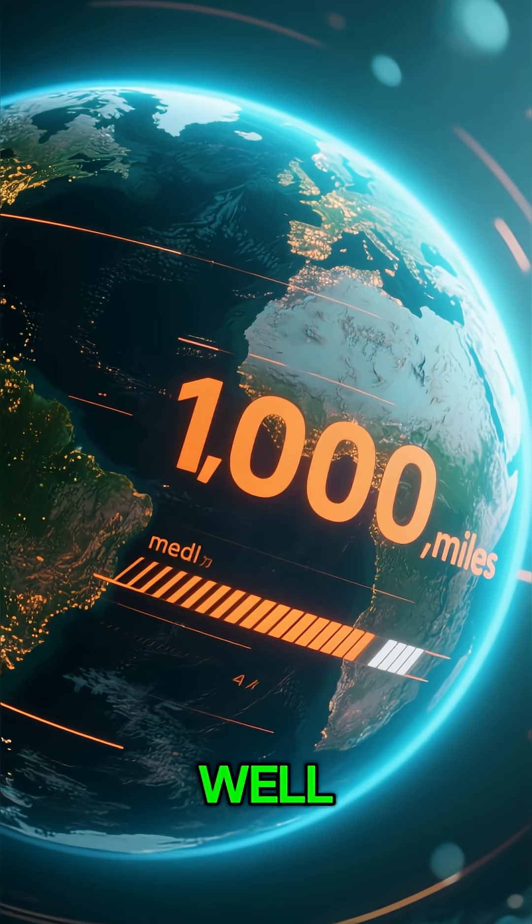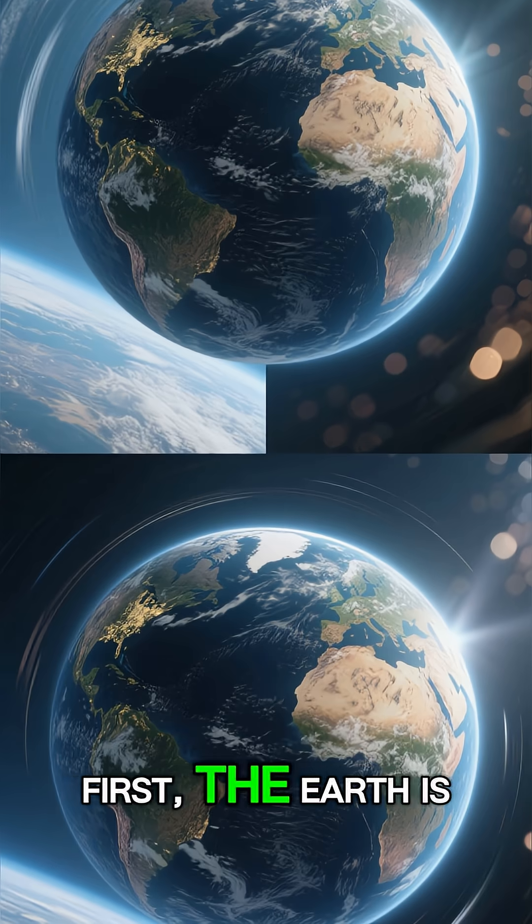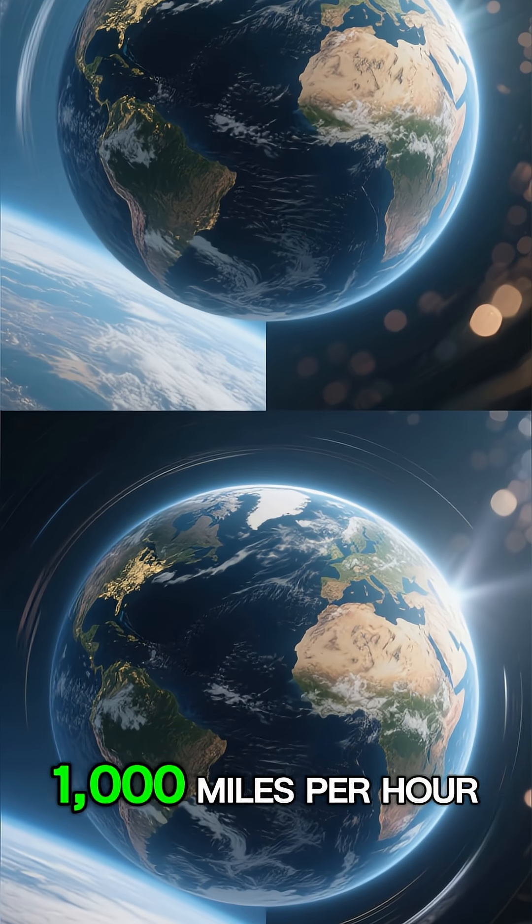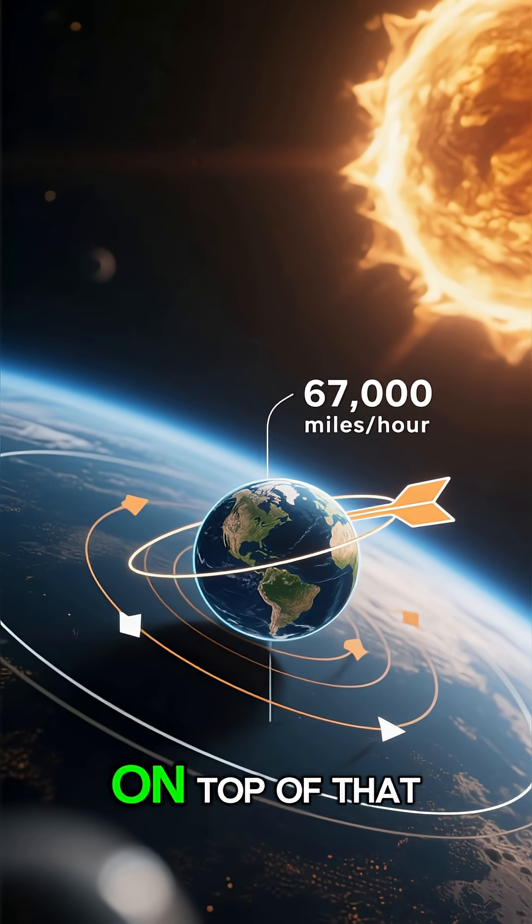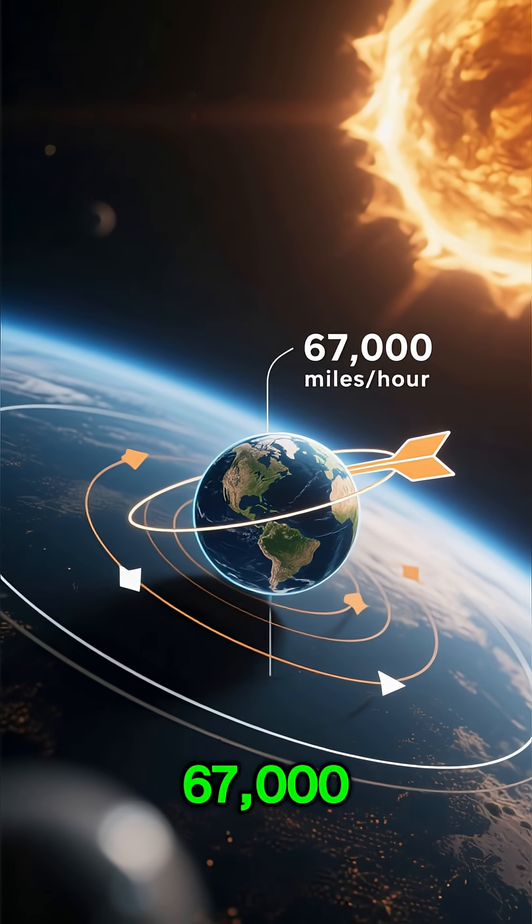So how is this possible and why don't we feel a thing? Well, it's all about layers of motion. First, the Earth is spinning on its axis at about 1,000 miles per hour. On top of that, it's orbiting the Sun at a cool 67,000 miles per hour.